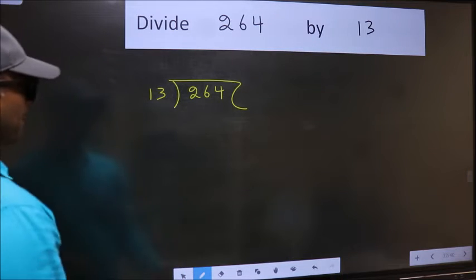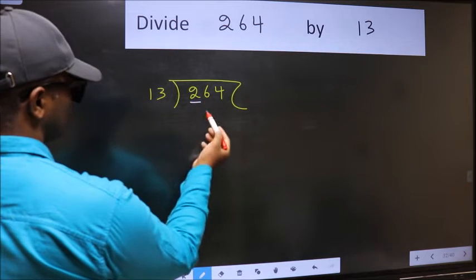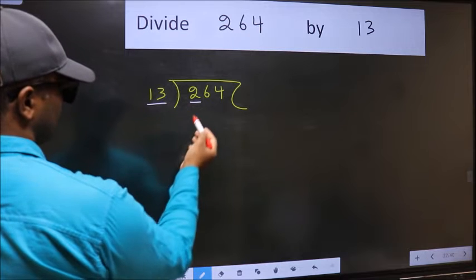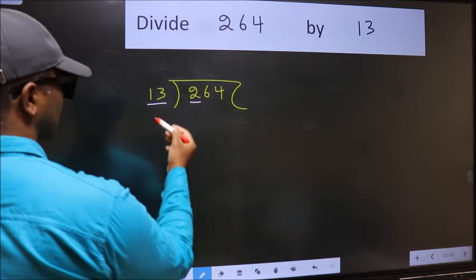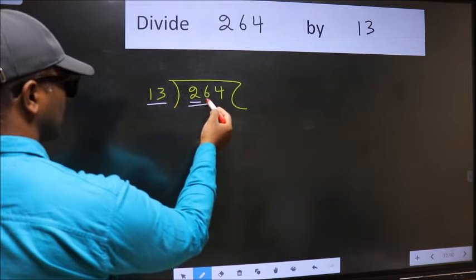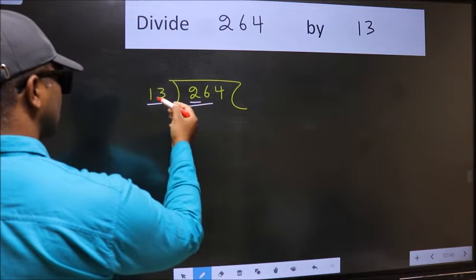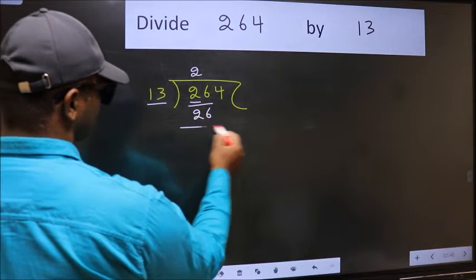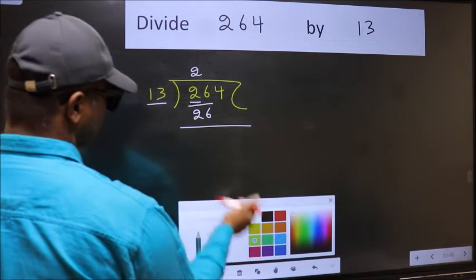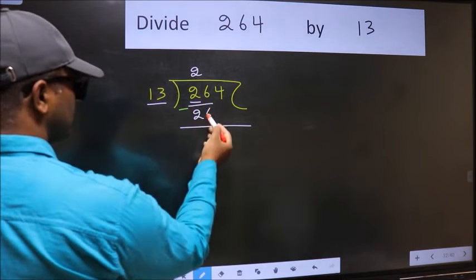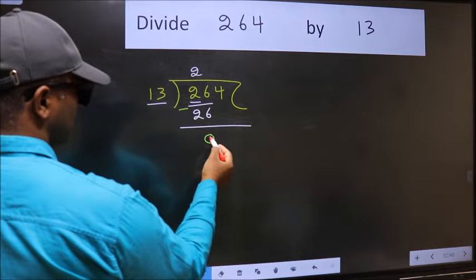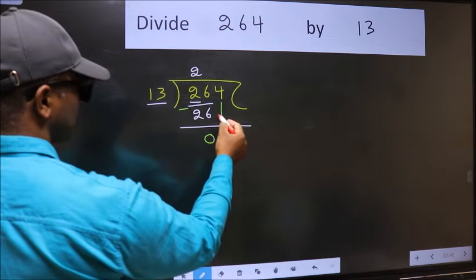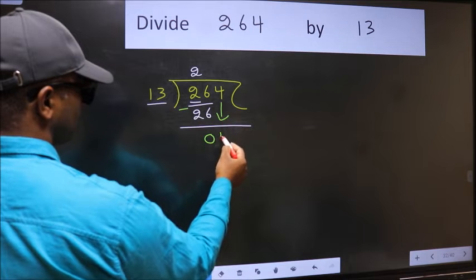Here we have 2 and here 13. 2 is smaller than 13, so we should take 2 numbers, 26. When do we get 26 in 13 table? 13 to 26. Now we should subtract. 26 minus 26 is 0. After this, bring down the beside number. So 4 down.